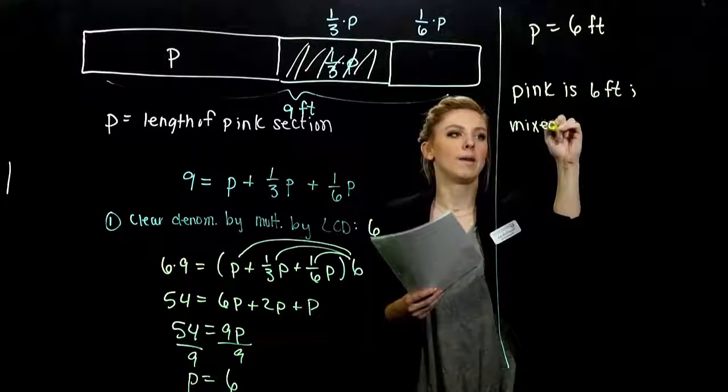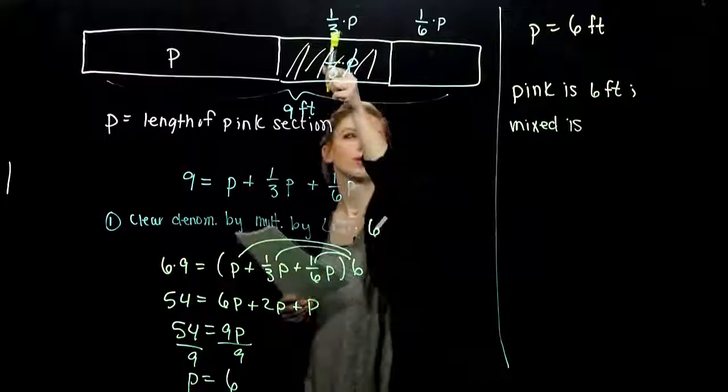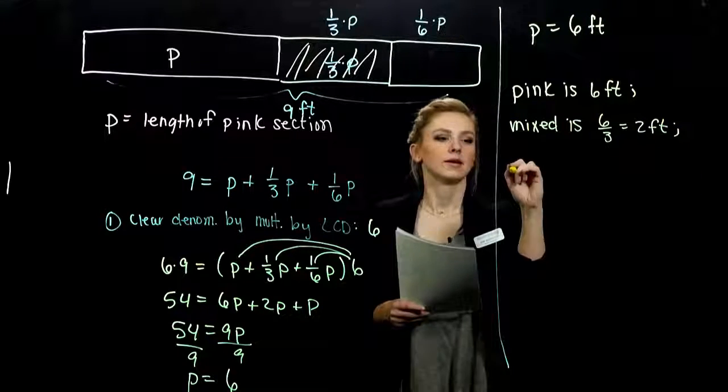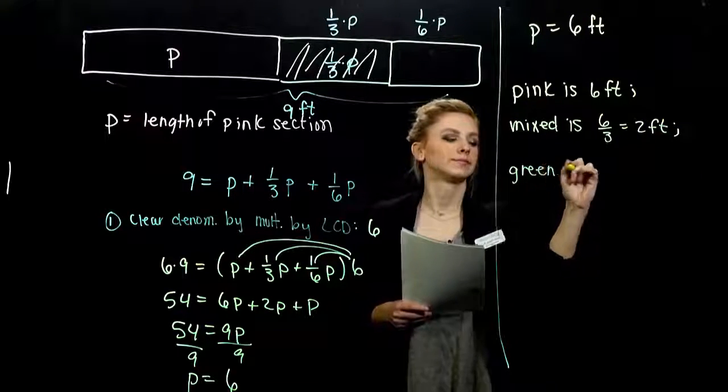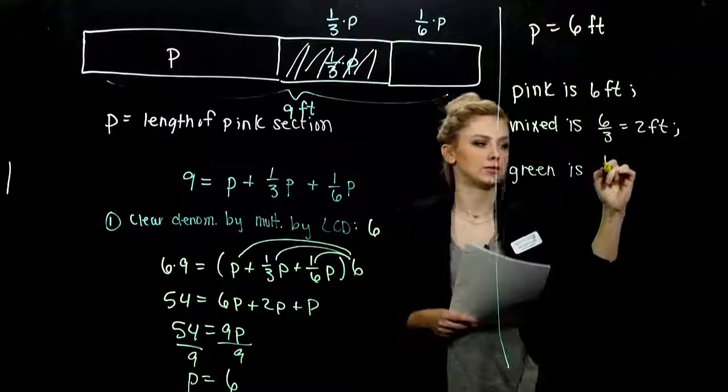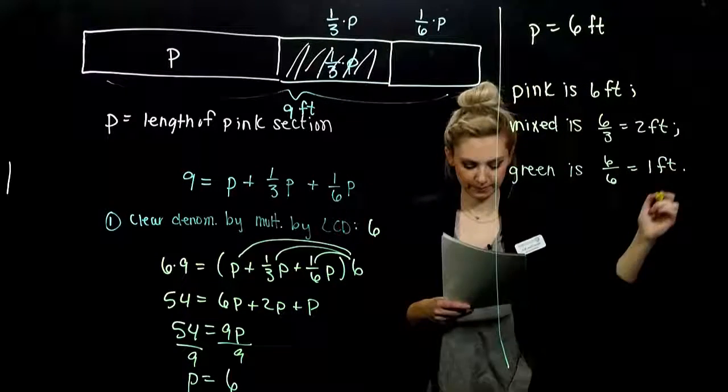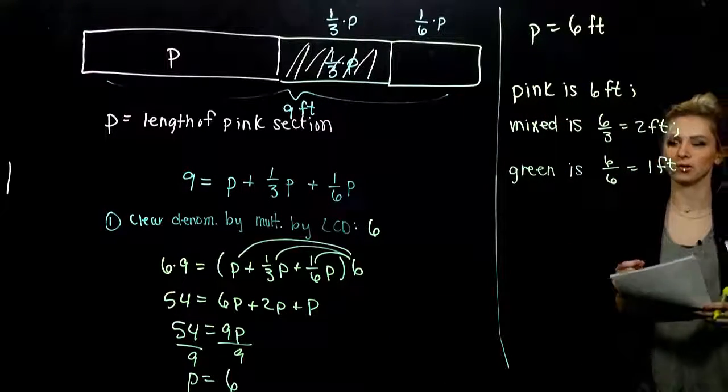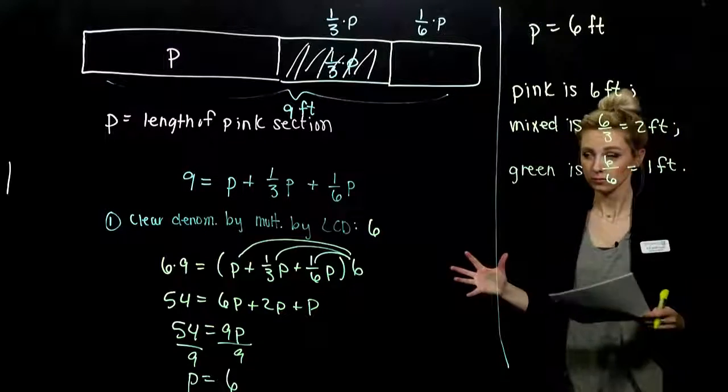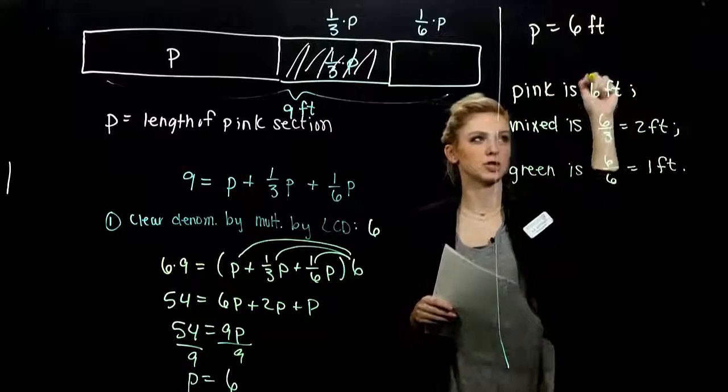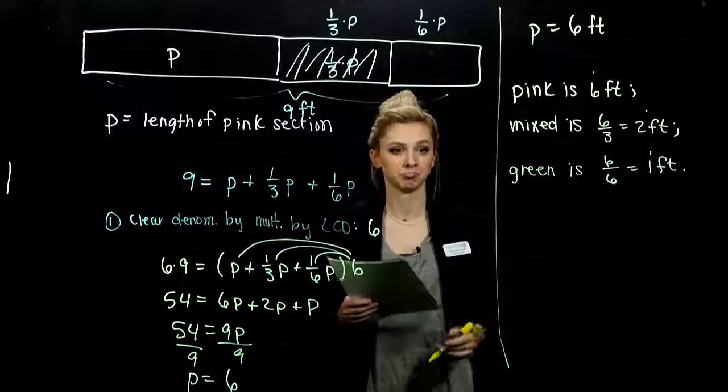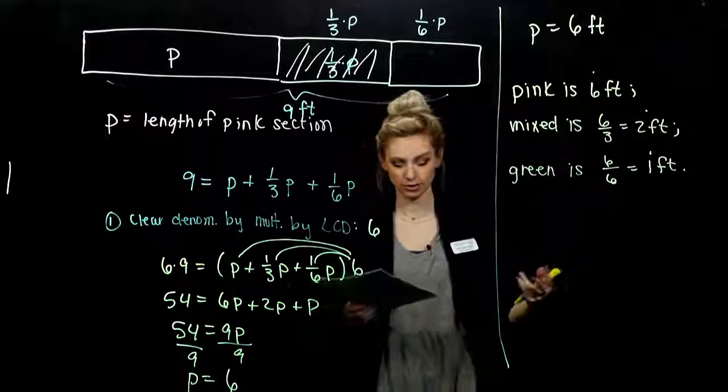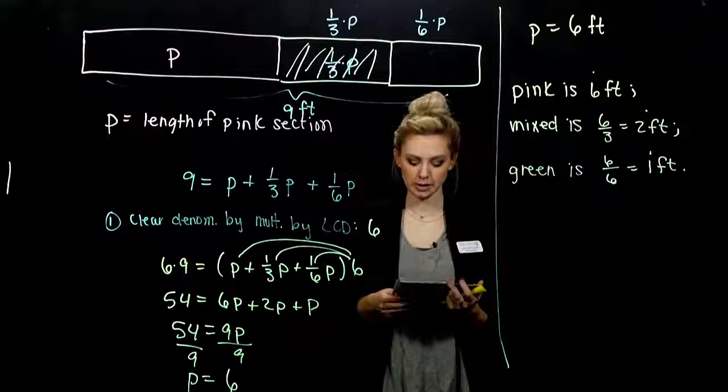And then the green section is one-sixth of p. So six divided by six gives me one foot. So the pink chunk, pretty long. Shorter mixed, really short green, altogether. If you weren't sure if you did it correctly, add them up. Make sure if six plus two plus one gives you nine, and they have that relationship of a third of the pink and a sixth of the pink, then it's true. All right. On the next page, one for you to try. A little bit different.